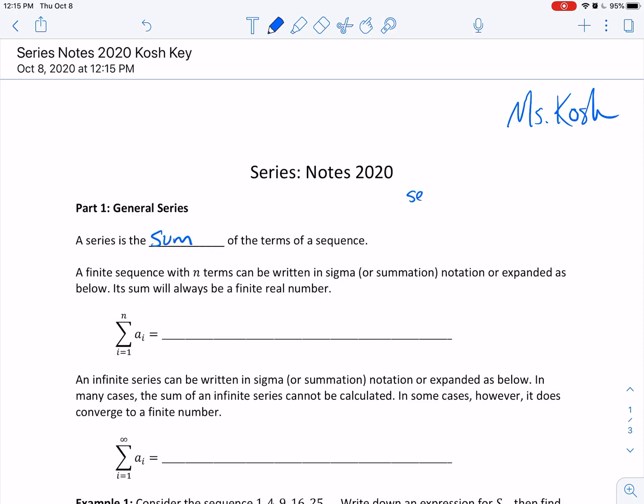So if I have a sequence that's 1, 2, 3, 4, then the series would just become 1 plus 2 plus 3 plus 4.